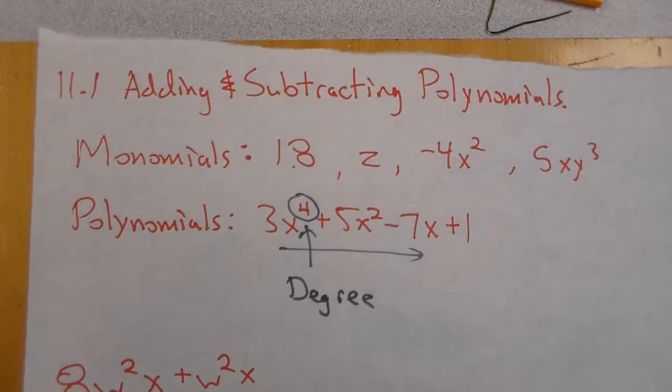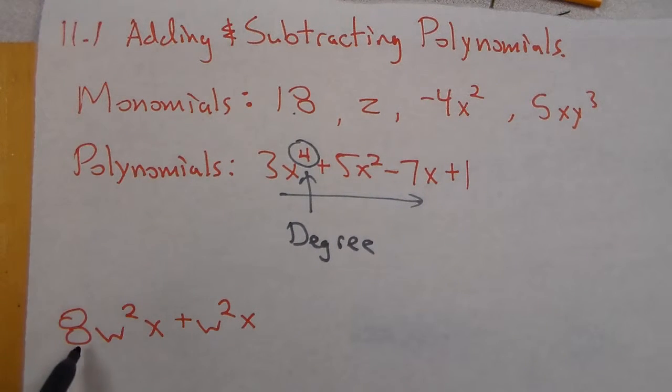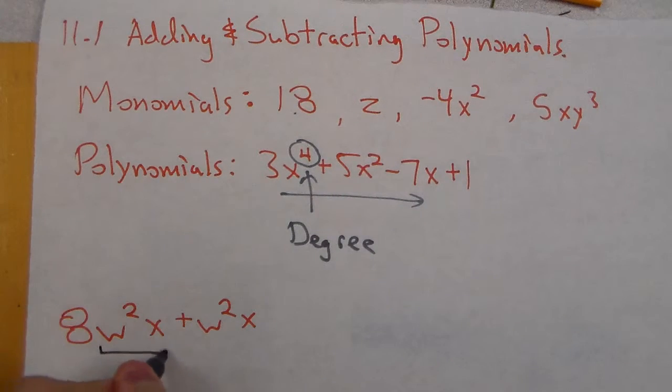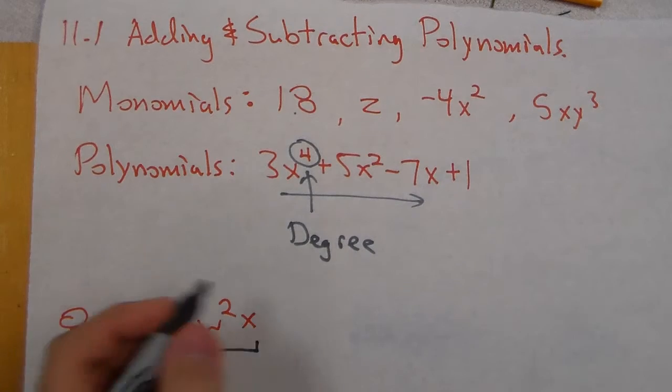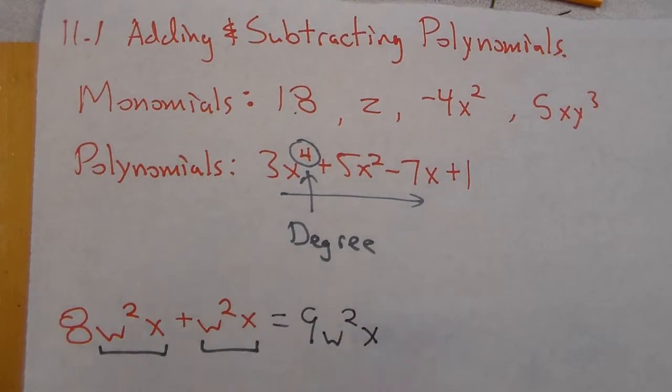So as we go through we're going to just start with combining terms. If we combine like terms with our polynomials 8w²x plus w²x, we're saying how many of w²x's do we have? Well we have eight here, one here, we say that's 9w²x.